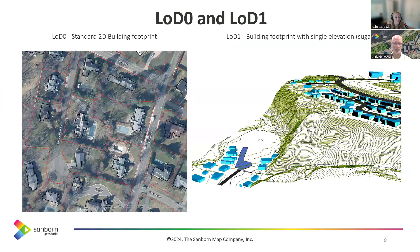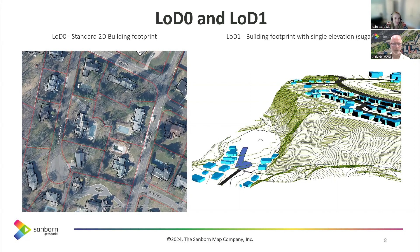So let's talk about those actual levels of detail. For level of detail zero, pretty sure everybody's familiar with that — it's the most standard, well-used type of scenario. It's really good for your standard analysis of how much building structure do I have per parcel, or what's my setback from the parcel line — things like that.